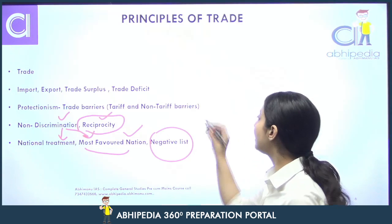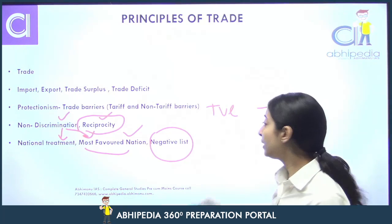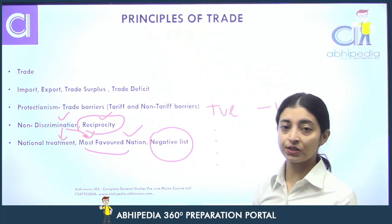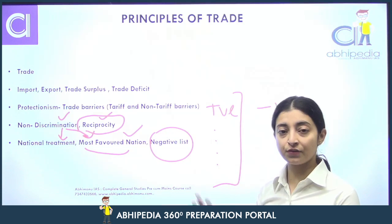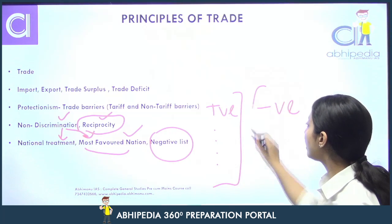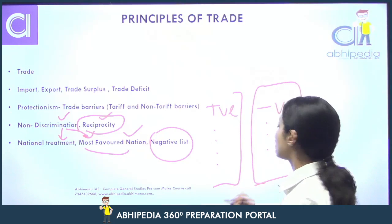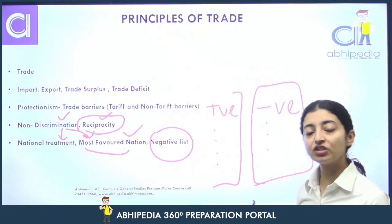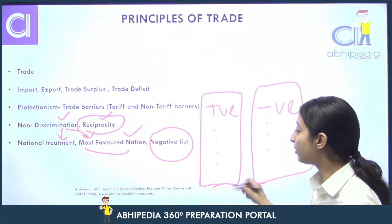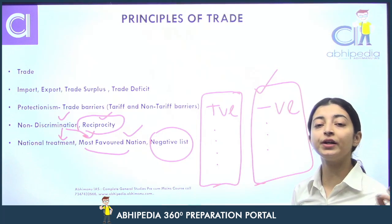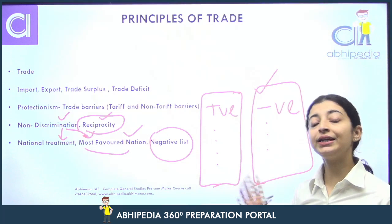Ab aate hain negative list pe. Trade do list mein hota hai: positive list aur negative list. Positive list ka matlab kya hota hai? Trade sirf un cheezon mein ho sakta hai jo items mentioned hain in the list — that is positive list. Negative list ko kaise samjhein? Jo mentioned items hain, unko chod ke baaki sab items pe trade ho sakta hai. WTO kehta hai ki negative list pe trade karo, matlab ismein effectively jo items restricted hain unhe hi mention karo, baaki sab items pe free trade ho raha hai. Toh negative list mein zyada trade hota hai, isliye WTO kehta hai negative list pe trade karo.